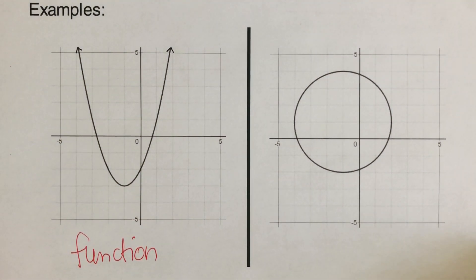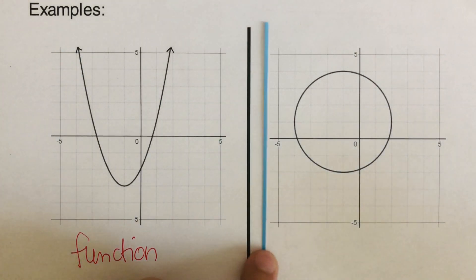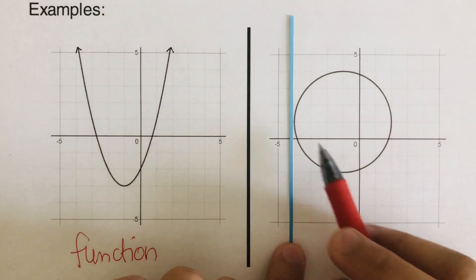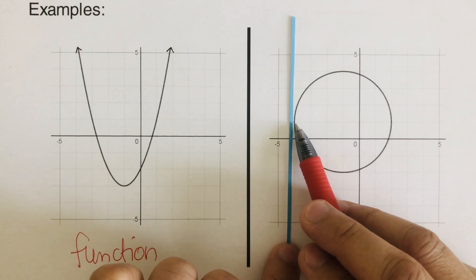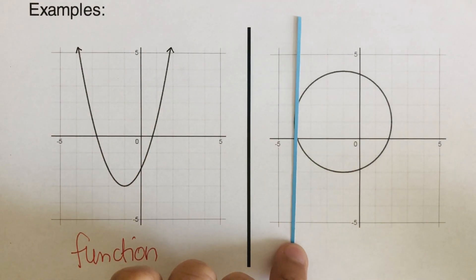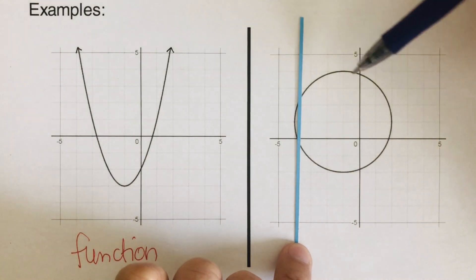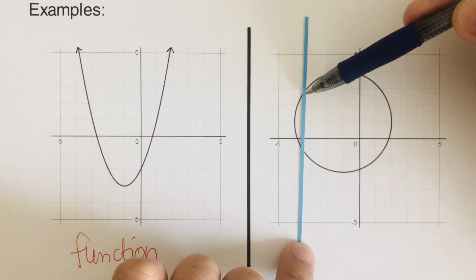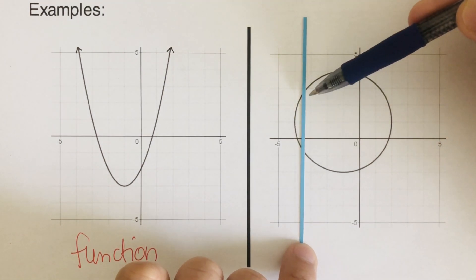Now let's have the next one. As you can see, it's touching at one point only — this is the point of tangency. But as we move towards the middle of the circle, it's touching at two points at this time.